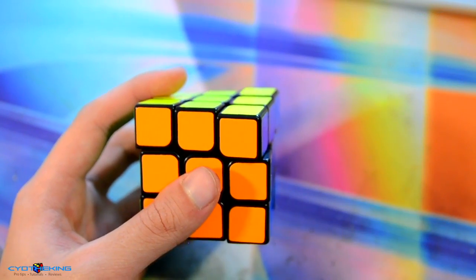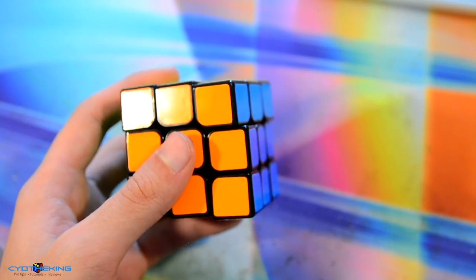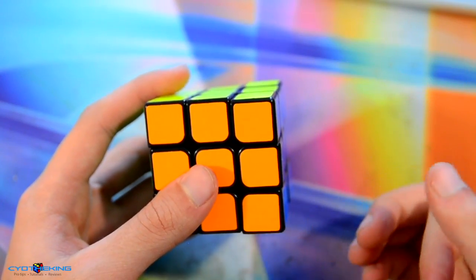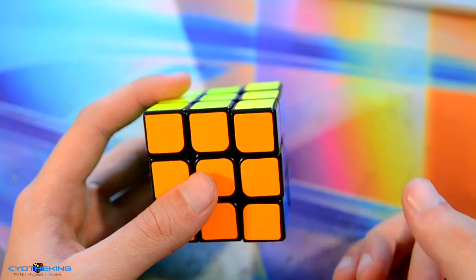And then there's three random moves, I guess F prime U prime F, and then R U R prime. So that's really easy. It's just essentially three triggers in there, or four if you want to count F prime U prime F, and just inserting a pair from another angle. But when you break your algs down like that, it becomes a lot easier to learn them.